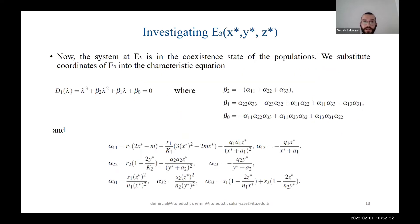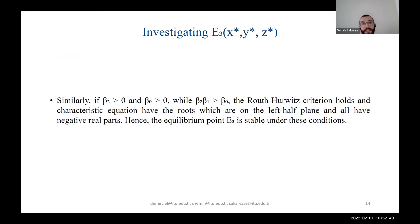Similarly, we substitute E3 into the characteristic equation and find the following results. We can say that the Routh-Hurwitz criterion holds here — as these three conditions are satisfied, our equilibrium point E3 is stable under these conditions.